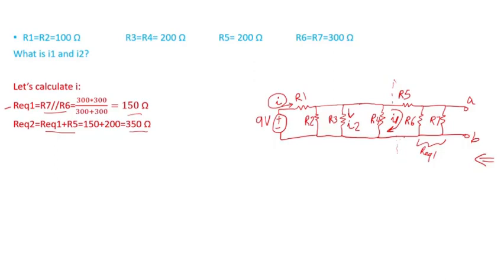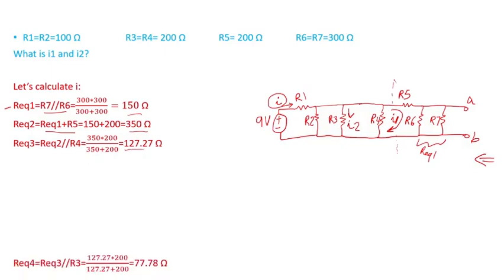Once I find R equivalent 2, I notice it's in parallel with R4, R3, and R2. So R equivalent 3 equals R equivalent 2 in parallel with R4. I do the math and get 127.27 ohms.